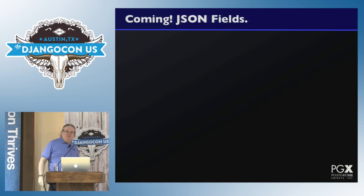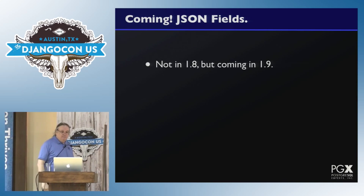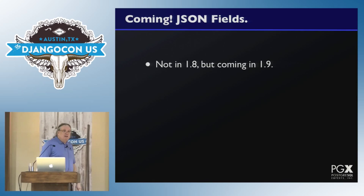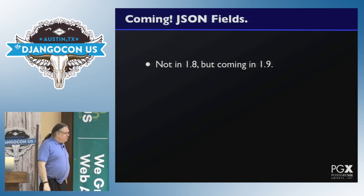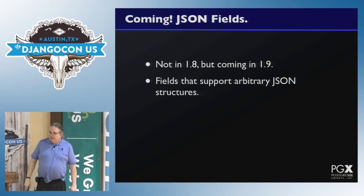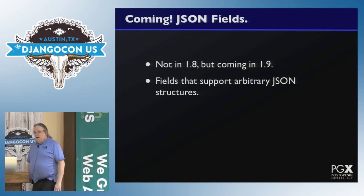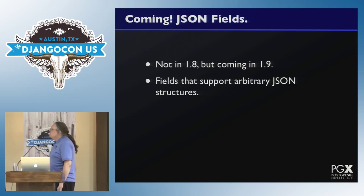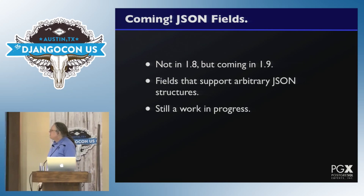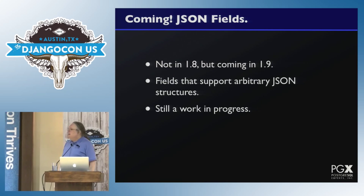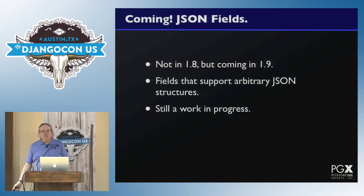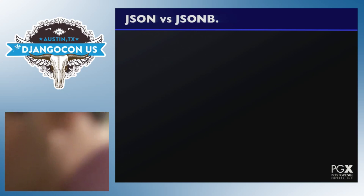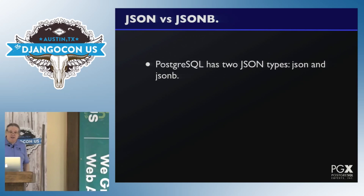You should use range fields to represent ranges. It's more natural and you get better operations than the traditional high-low pair of values in the database. You get more database integrity and more interesting operators available. Coming soon we have JSON fields — they're not in 1.8, but they've landed for 1.9.